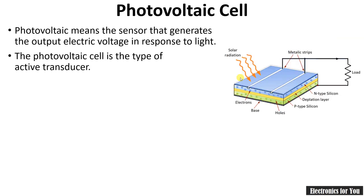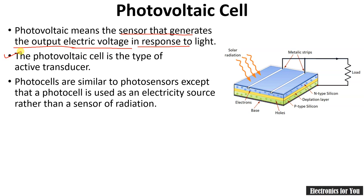Next is the photovoltaic cell. When we say photovoltaic, it means it generates an output electric voltage in response to light. When light energy falls on the photovoltaic cell, it converts that light energy into an electrical signal, making it an active transducer. The photovoltaic cell generates electrical energy — a well-known example is the solar cell. Typically the solar cell is a semiconductor junction element made up of materials such as single crystal silicon, polycrystalline silicon, or cadmium sulphide.